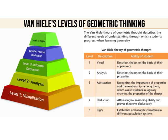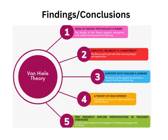The last stage of the model is called rigor. This is where learners are able to establish and analyze theorems in different postulates. After analyzing this model based on the works of people like Brodie, I realized that the model is based on ideas of Gestalt psychology. The model is simple, reliable, and very compatible. The model supports teachers and learners, and is a theory of high interest to mathematics educators, though only few researchers explore investigations in teaching strategies involving the model.